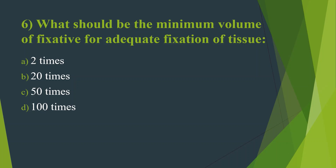Sixth question: What should be the minimum volume of fixative for adequate fixation of tissue? Option A: 2 times. Option B: 20 times. Option C: 50 times. Option D: 100 times. Here the answer is Option B — 20 times. The most popular fixative in histopathology is 10% neutral buffered formalin. The minimum volume of fixative for adequate fixation is 20 times the tissue volume. Inadequate volume leads to poor and variable fixation.